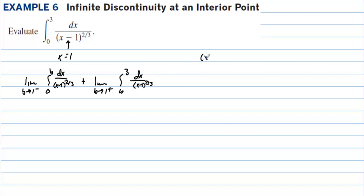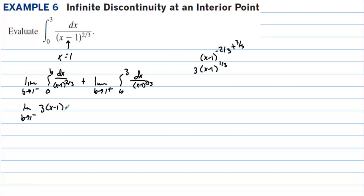Now let's look at this function — it's really (x minus 1) to the negative 2 thirds. If we take the integral, we add 1 to get 3 thirds, giving us (x minus 1) to the 1 third, times 3. That gives us the limit as b approaches 1 from the left of 3 times (x minus 1) to the 1 third, evaluated from 0 to b.